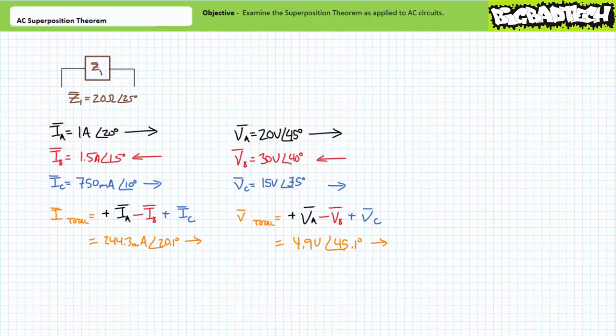Again, you'll note voltages A and C are aiding each other and that their polarity is the same. Voltage B, in contrast, is opposing both A and C because its polarity is opposite. When summating these individual contributions, assuming A and C are positive and B is negative, allows us to account for polarity.